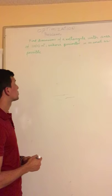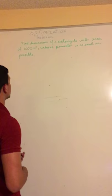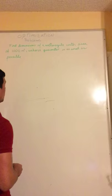Here we have a problem where we have to find the dimensions of a rectangle with an area of 1000 m² whose perimeter is as small as possible.